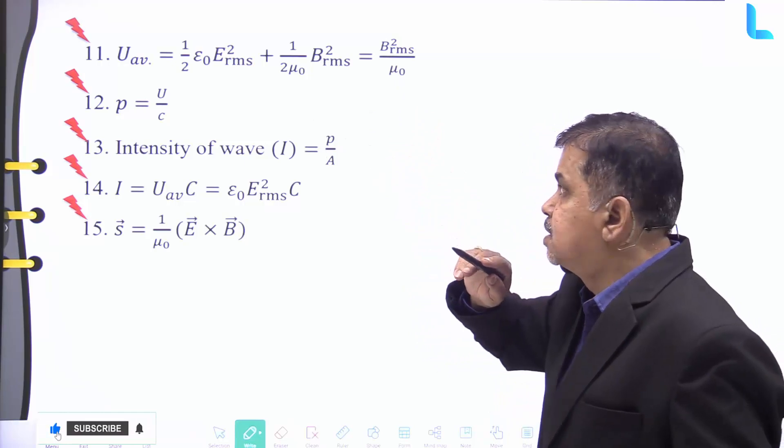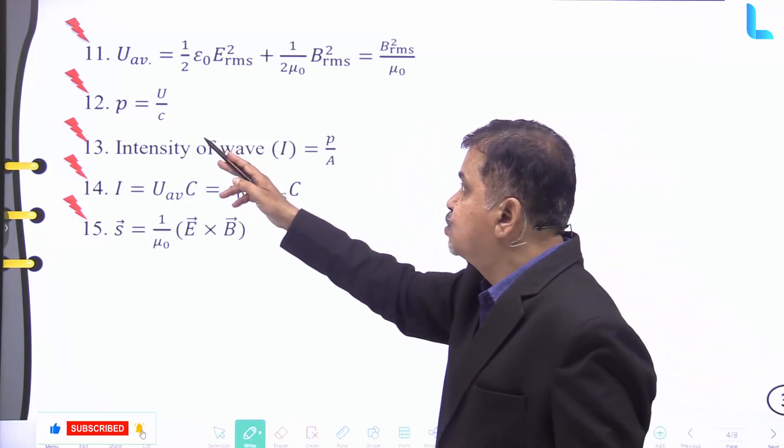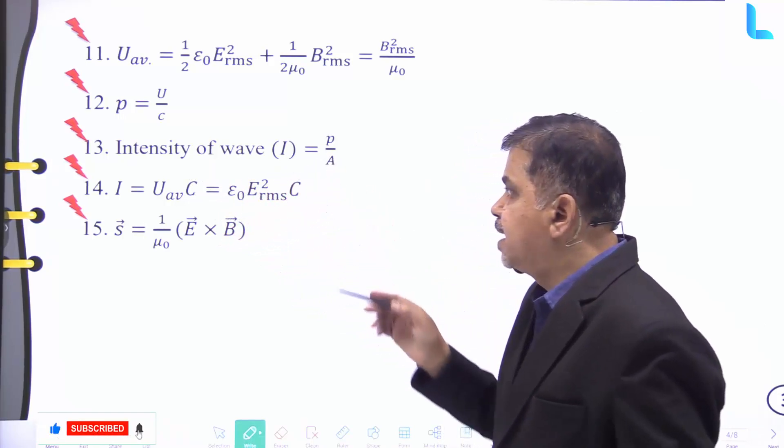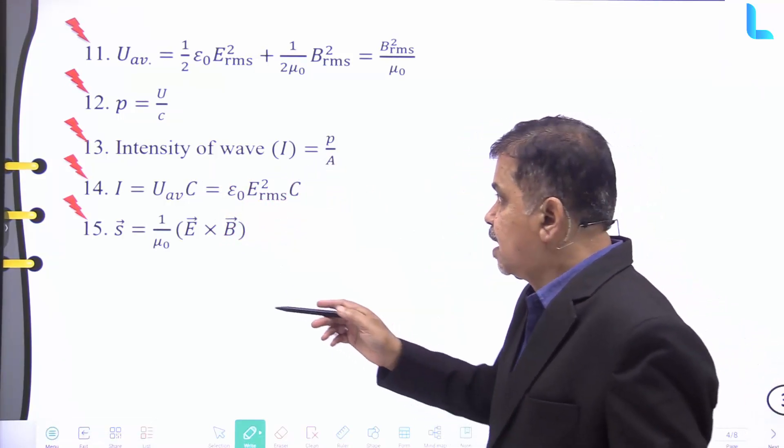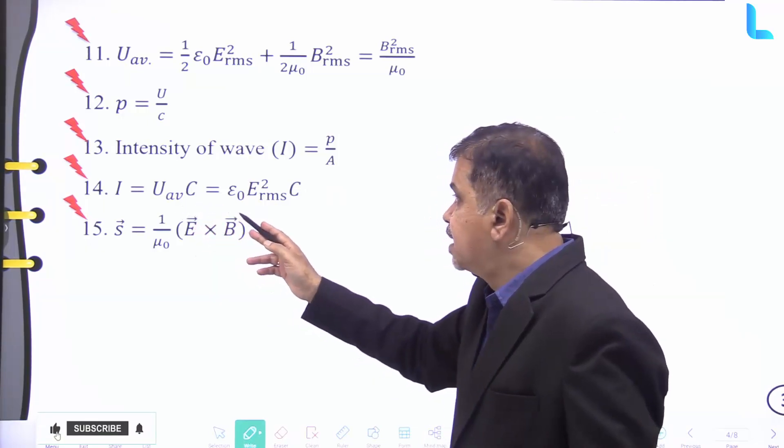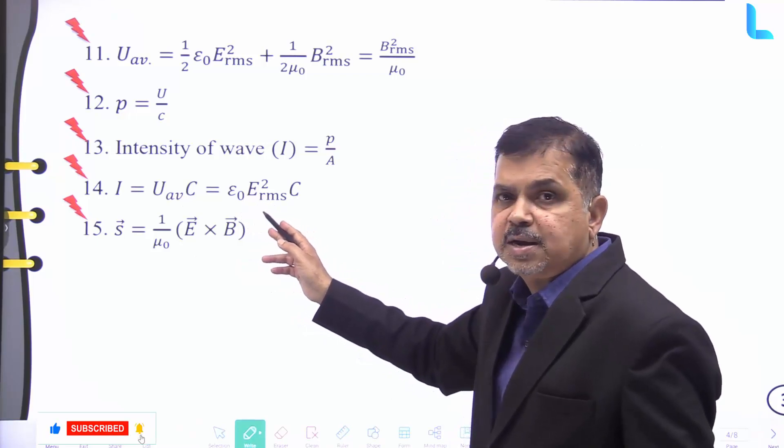And p is given by u divided by c. And the intensity of the wave I is given by p by A. Further, I is equal to Uav into c, and that is equal to ε₀ into Erms whole square into c.